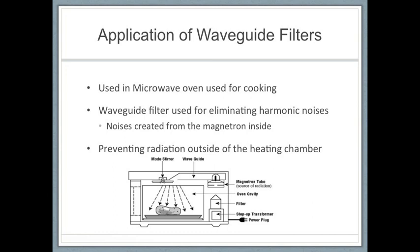We will now be moving on to applications of waveguide filters. This section focuses on waveguide filters used in microwave ovens. This invention relates to a microwave oven used for cooking, particularly a waveguide filter used in a microwave oven for eliminating harmonic noises created by the magnetron and preventing microwave radiation outside of the heating chamber, as seen in the diagram on the slide.